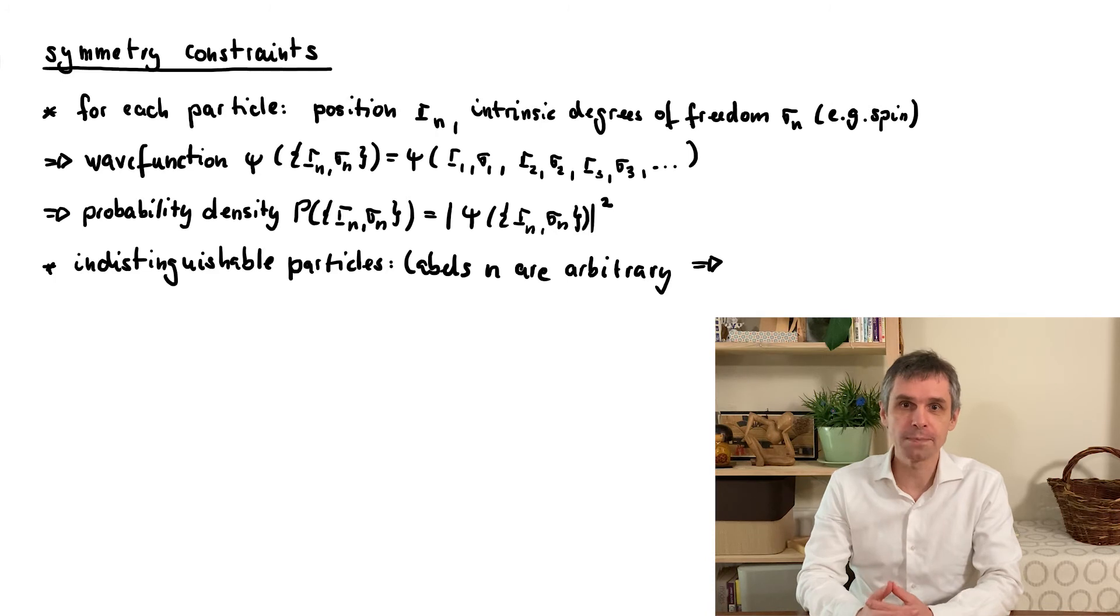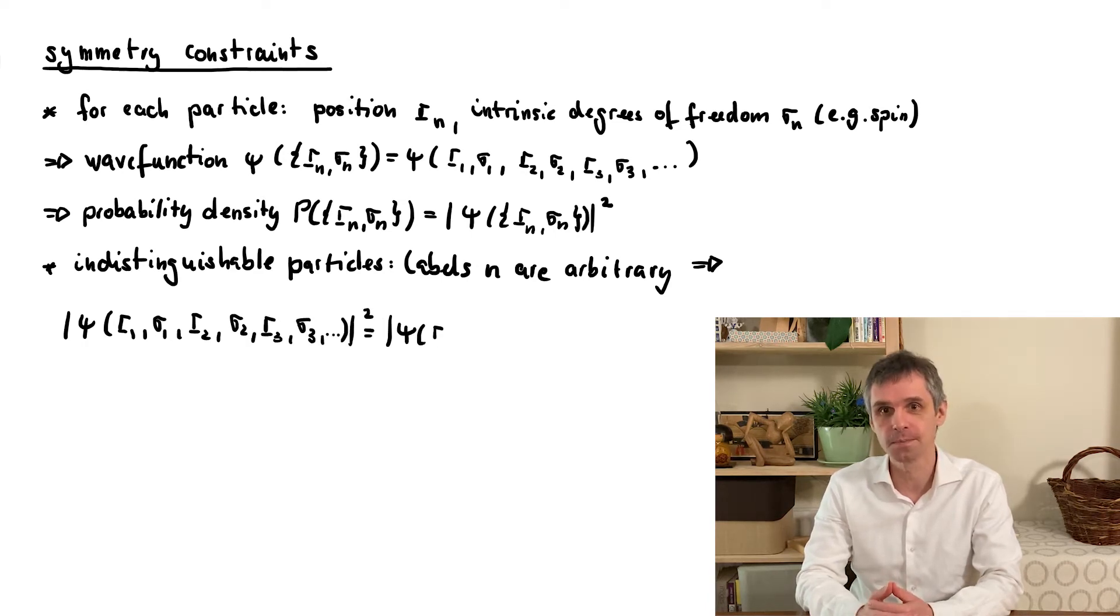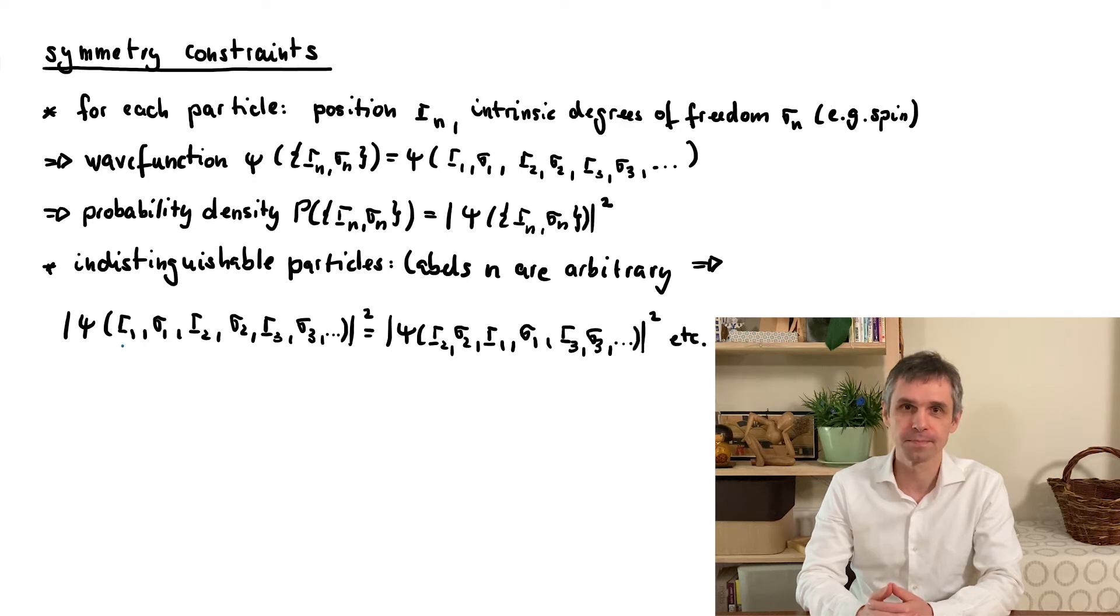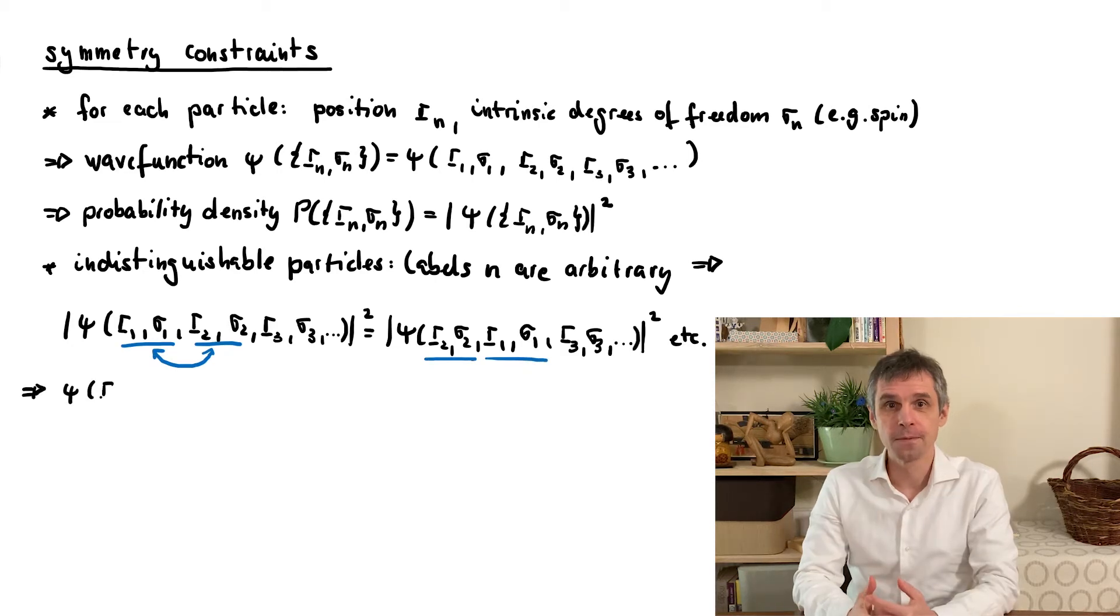...even though there are ways to extend this for instance to composite particles such as atoms. We make this premise concrete by saying that the probability density should not change when we interchange the labels of the particles. So the indices that we attach to their positions and intrinsic degrees of freedom. I indicate this here for indices 1 and 2, but this should really hold for any pair of indices.